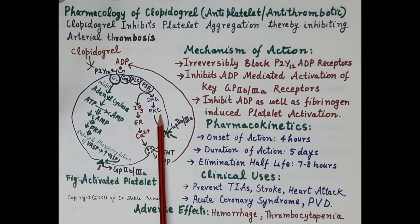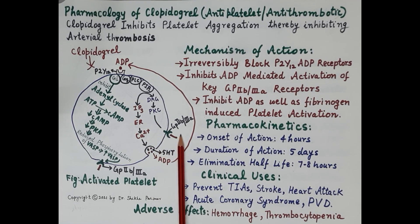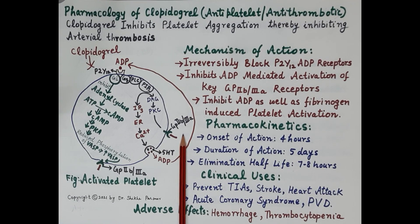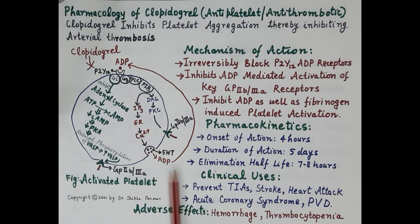Apart from this, diacylglycerol stimulates protein kinase C. Stimulation of protein kinase C further stimulates GP2b3a fibrinogen receptors, which induces cross-linking with other platelets through fibrinogen. This diagram clearly explains the immense potential of ADP in inducing platelet aggregation.